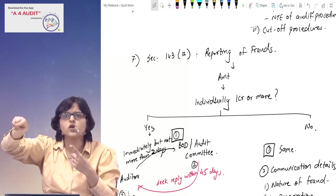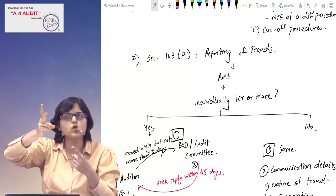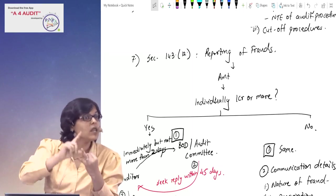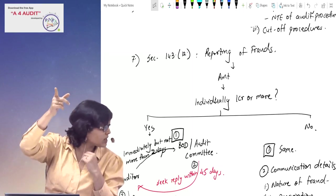Procedure: first of all, who will you tell? Board or audit committee, not more than two days but ideally immediately. Then reply within 45 days. Within next 15 days, CG will communicate.